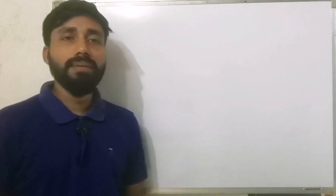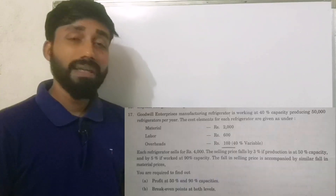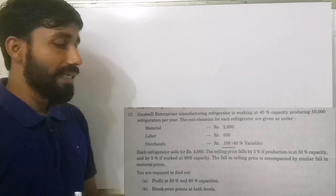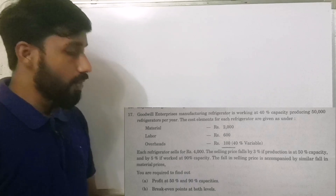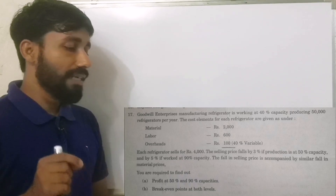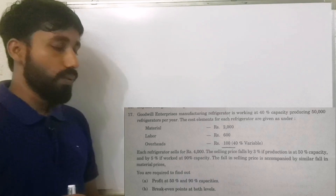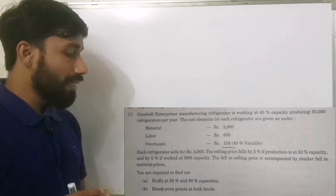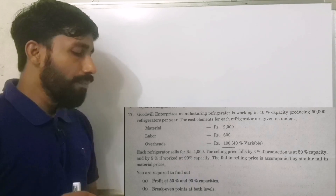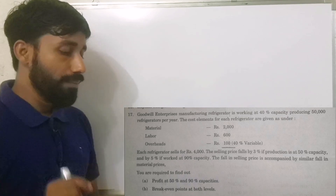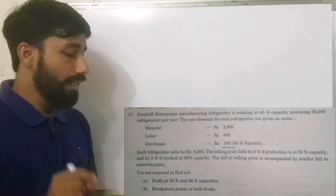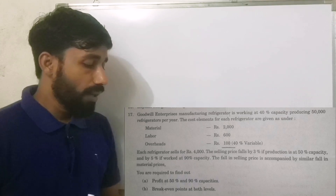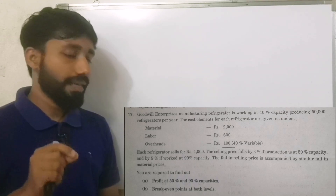The next question: Goodwill Enterprises manufacturing refrigerators is working at 40% capacity producing 50,000 refrigerators per year. The cost elements per refrigerator are: material Rs. 2000, labour Rs. 600, overhead Rs. 100 with 40% variable. Each refrigerator sells for Rs. 4000. The selling price falls by 3% at 50% capacity and by 5% at 90% capacity. The fall in selling price is accompanied by a similar fall in material prices. Find profit at 50% and 90% capacities.